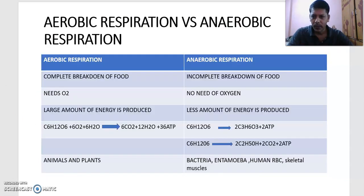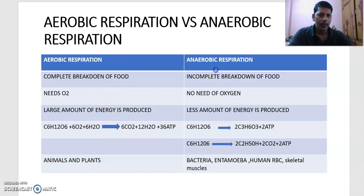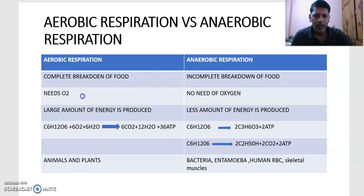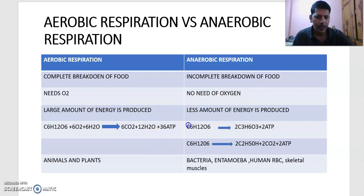Now, aerobic vs. anaerobic respiration. In aerobic respiration, complete breakdown of food takes place; in anaerobic respiration, incomplete breakdown of food takes place. Aerobic respiration requires oxygen; anaerobic respiration does not require oxygen. A large amount of energy is produced in aerobic respiration — 36 ATP molecules — whereas only 2 ATP molecules are produced in anaerobic respiration.